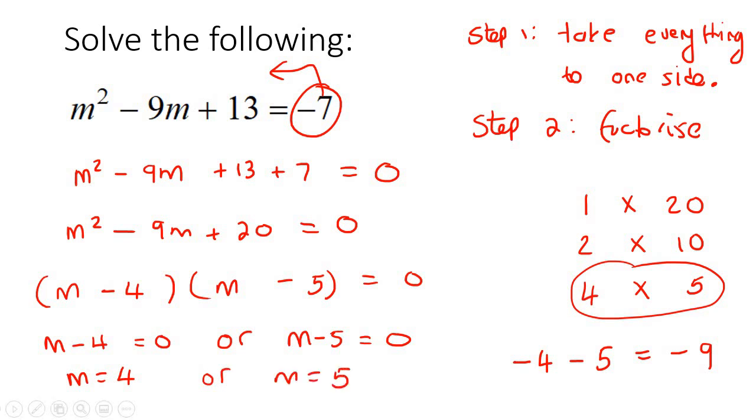And that is the answer — you get two answers because of the squared term.